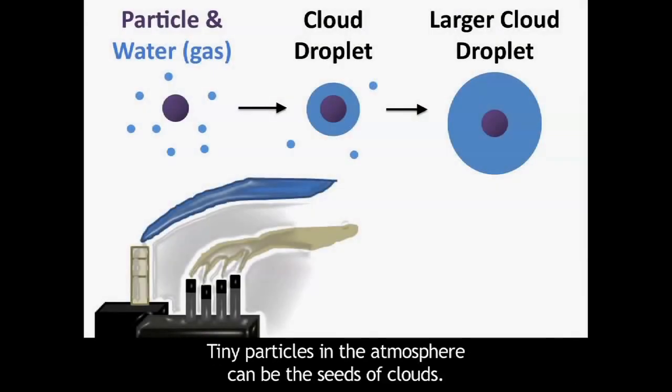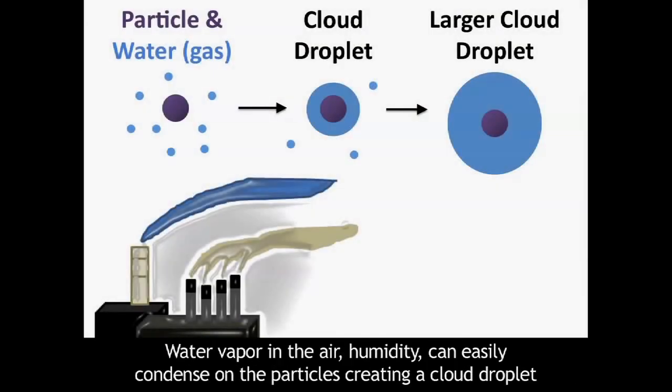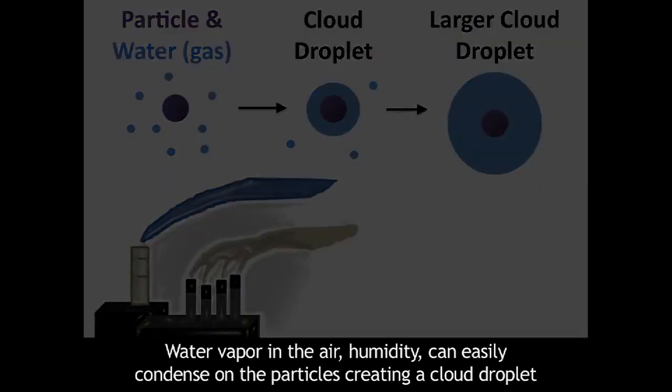Tiny particles in the atmosphere can be the seeds of clouds. Water vapor in the air can easily condense on the particles, creating a cloud droplet.